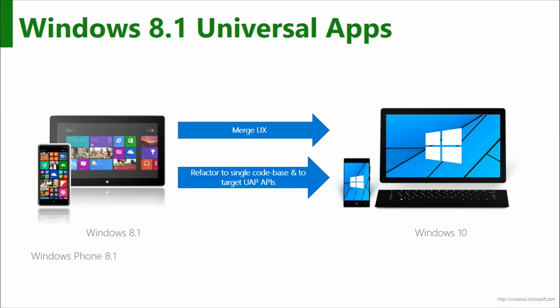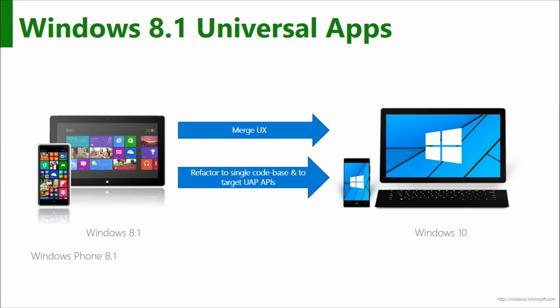What about Universal Apps — where you have a dual-headed project with a phone app package and a store package? All your code will move across without much change. You've got to think about what you want to do with the UX. The most probable approach is to merge it into one — create a responsive UI by drawing on the different UI designs from your phone head and tablet head, using the adaptive UI techniques covered in this course.